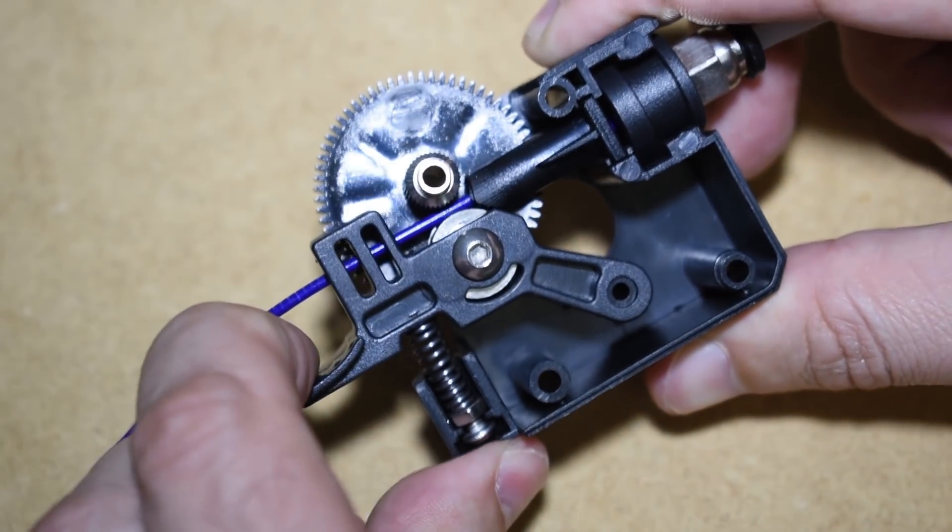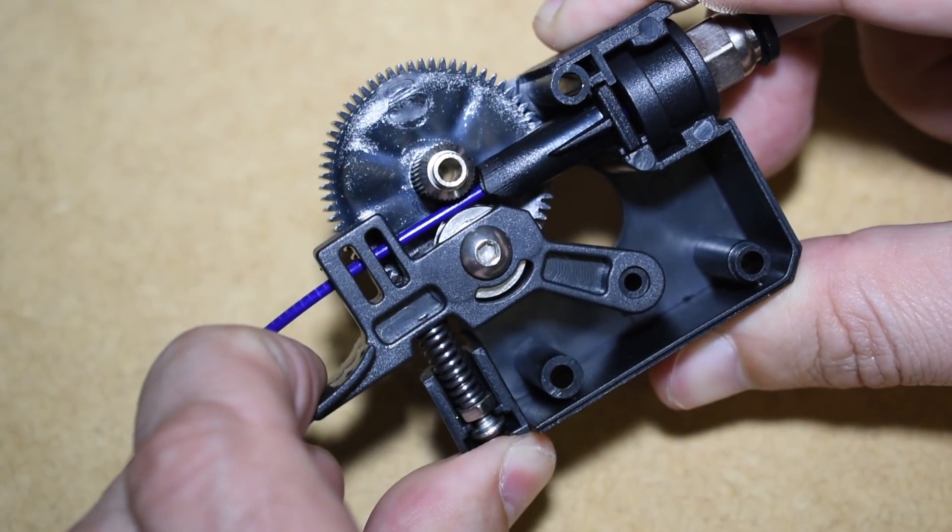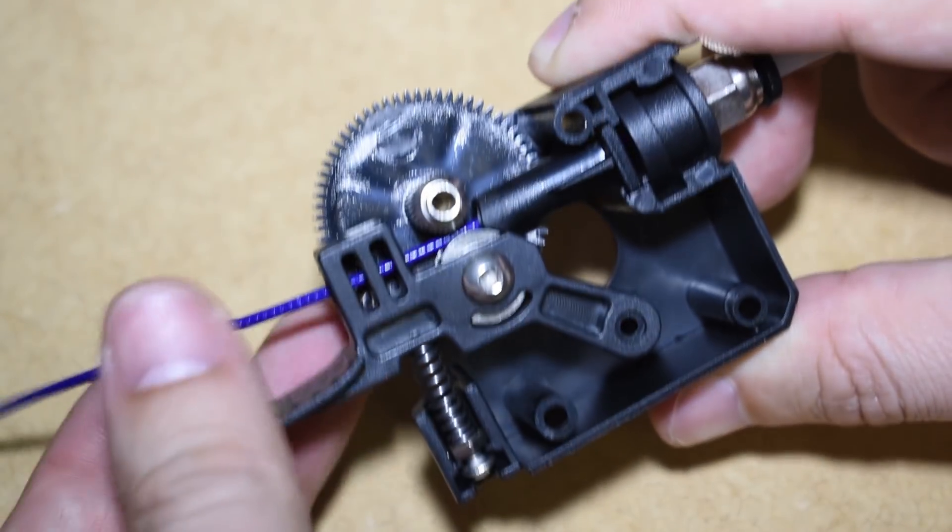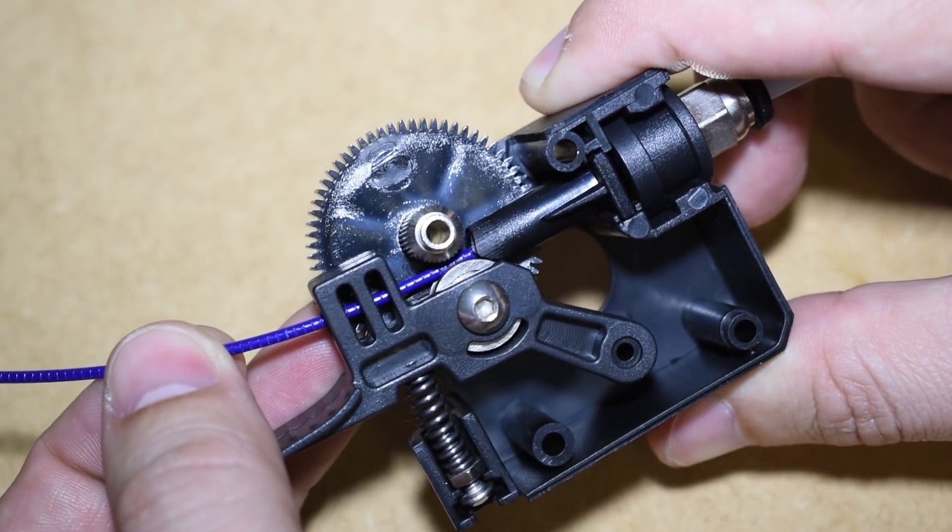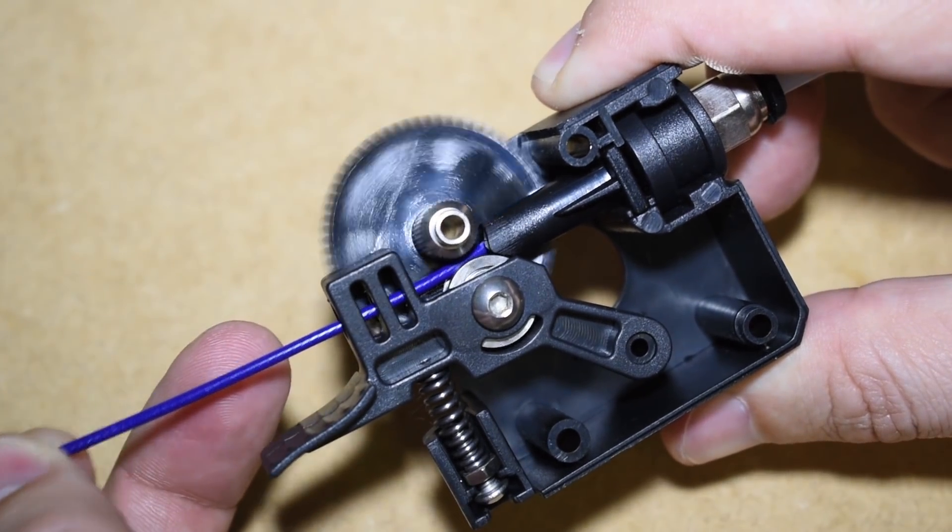And this is the spring that pushes the lever mechanism and bearing against the filament drive. The more compressed the spring is, the more tension it will create.